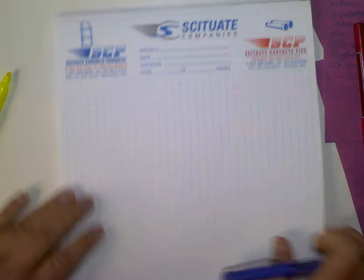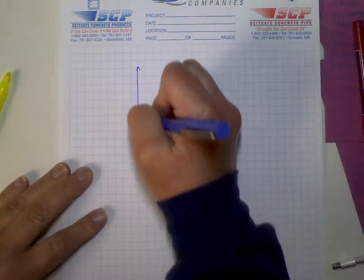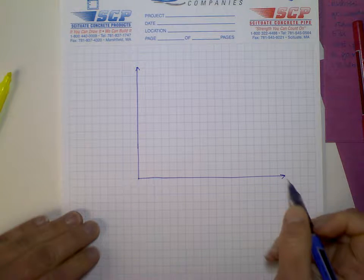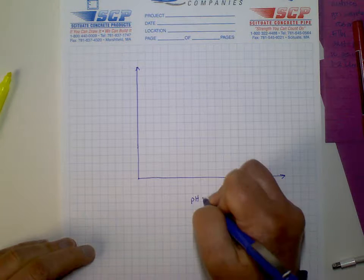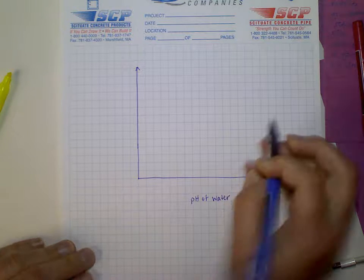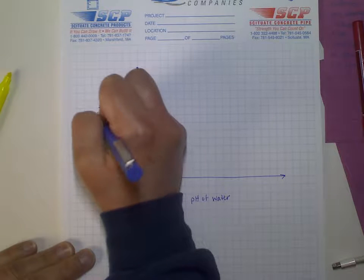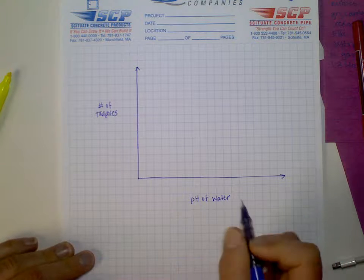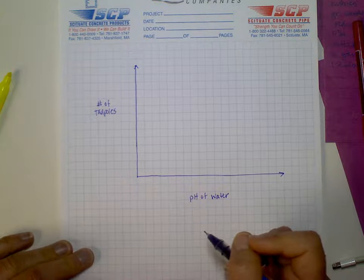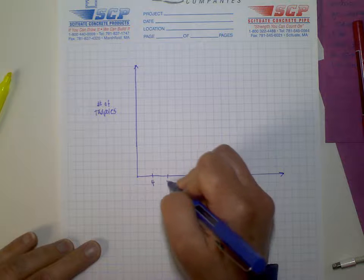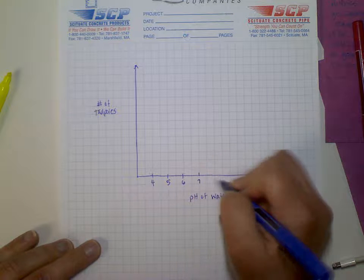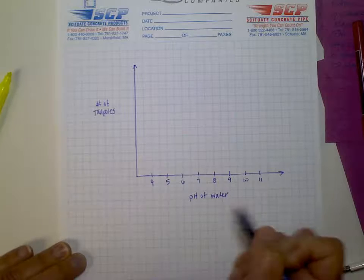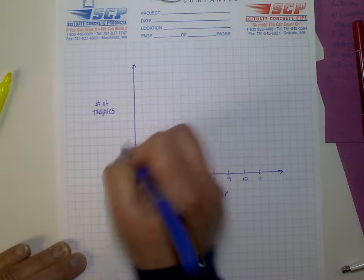Graphs can tell us a lot of things. You've heard the phrase, a picture is worth a thousand words. Well, a graph is a picture of our data in science class. A graph can take the place of a lot of words and a lot of explaining of data. We still have to use some words, but we can do a lot of analysis and show a lot of our results just by using a graph. We collect data in data tables, but we analyze the results in a graph.